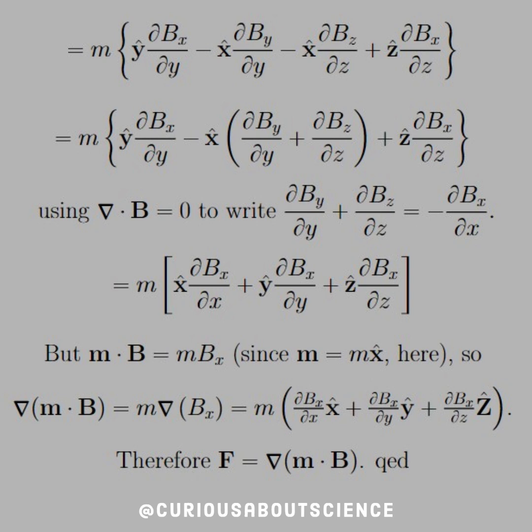Okay, so you get ∂Bx/∂x, you get ∂Bx/∂y, and you get ∂Bx/∂z with the x̂, ŷ, and ẑ respectively. So this shows that m·B equals mBx since m is equal to mx̂ here.